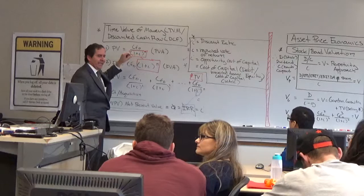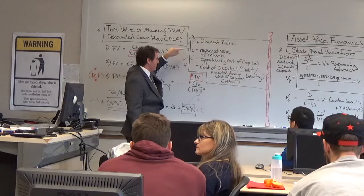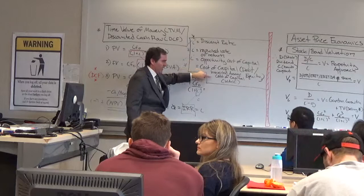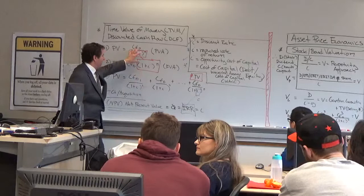This I is called the discount rate, it's called the opportunity cost of capital, it's also called the required rate of return. It could also be the cost of the debt, the cost of the equity, or the weighted average cost of capital. It's interchangeable, but the basic calculation and mathematics are the same.